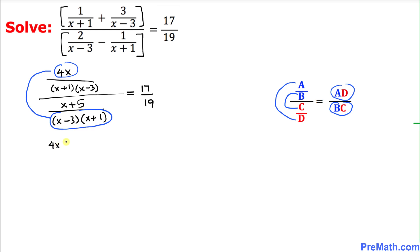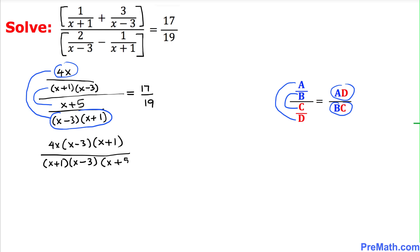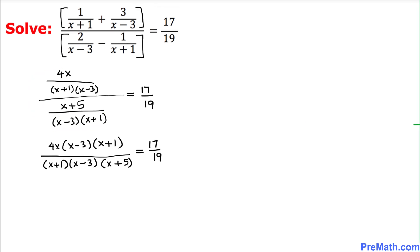So I can write 4x times x minus 3 times x plus 1 divided by x plus 1 times x minus 3 times x plus 5, equals 17 over 19. As we can see, x plus 1 cancels out and x minus 3 cancels out with x minus 3. So we simply end up with 4x on the numerator divided by x plus 5 at the denominator, equals 17 over 19.